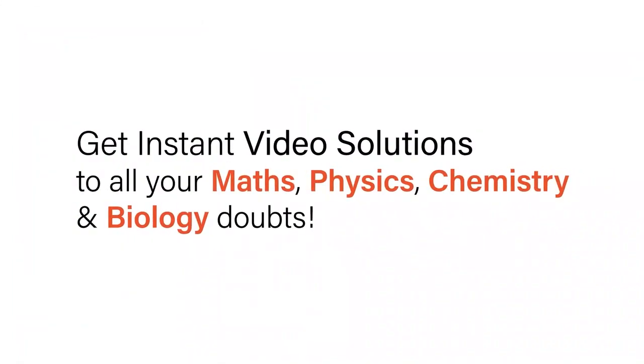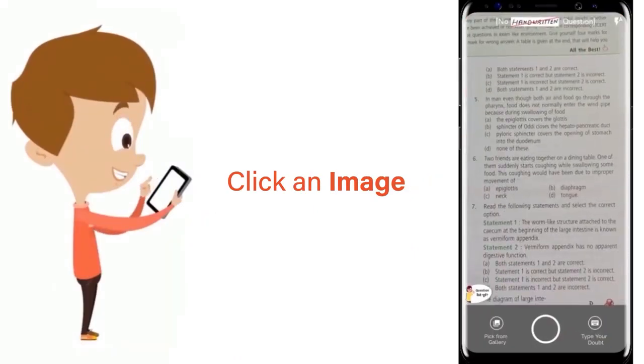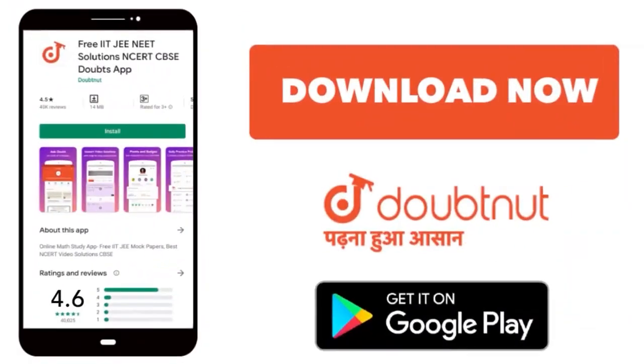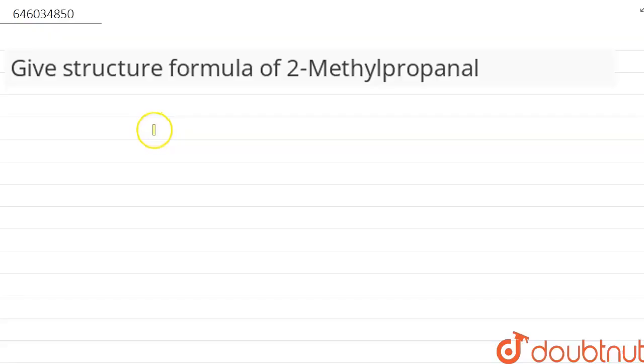With Doubtnet, get instant video solutions to all your math, physics, chemistry and biology doubts. Just click the image of the question, crop the question, and get instant video solution. Download Doubtnet app today. Hello everyone, our question is: give structure formula of 2-methylpropanal.